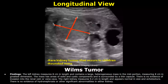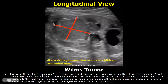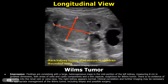This is a case of Wilms tumor. Its usual findings are a large heterogeneous mass with solid and cystic components, surrounded by a thin capsule. Here is the impression. The findings are consistent with a large heterogeneous mass in the mid portion of the left kidney, measuring 8 cm in greatest dimension, with areas of solid and cystic components and a thin capsule, suspicious for Wilms tumor.